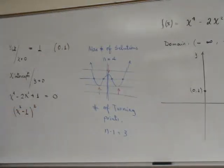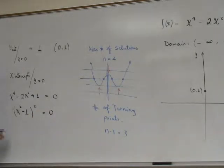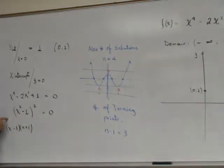So what we have here is x minus 1 times x plus 1. This is a difference of squares.